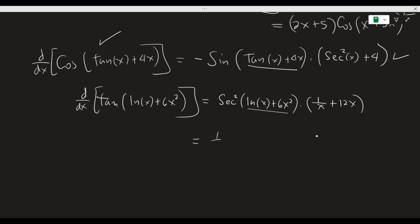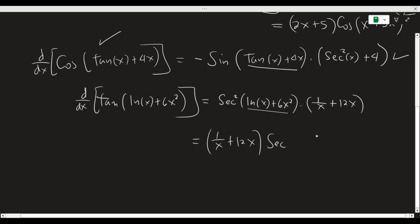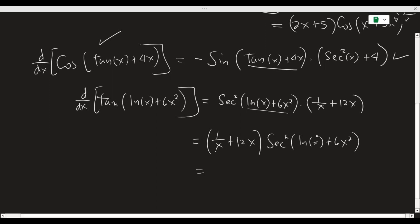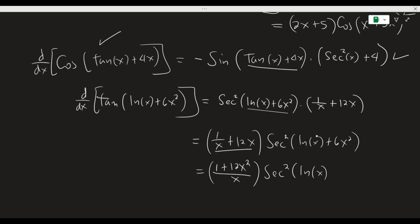Applying the commutative property of multiplication, we get 1 over x plus 12x, times secant squared of ln x plus 6x squared. We can simplify this further as 1 plus 12x squared over x, times secant squared of ln x plus 6x squared. This is the derivative of tangent of the sum of ln x plus 6x squared.